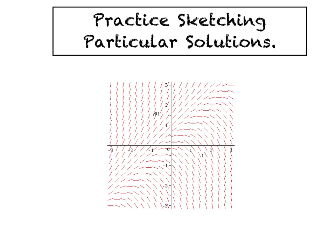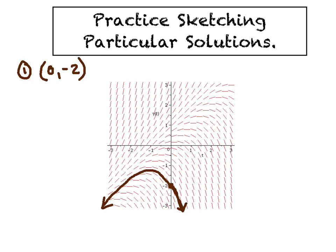We're going to start off with some very friendly problems where we just practice sketching a particular solution. We're going to assume the slope field has already been given to us. This slope field gives us a visual representation of all the general solutions linked together. For our first example, they might tell us the particular solution passes through the point (0, -2). Even though there's an infinite number of solutions, there's only one that passes through that point. I'm going to put a dot right there, and from that point, I'm going to follow the breadcrumbs — follow the stream — and it's going to shoot through the graph.